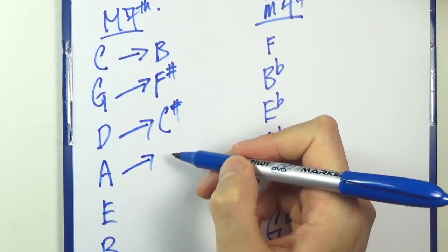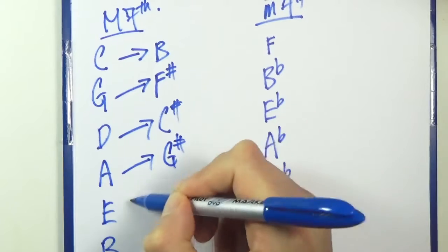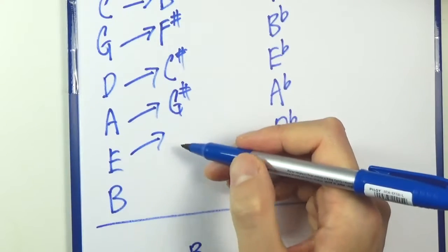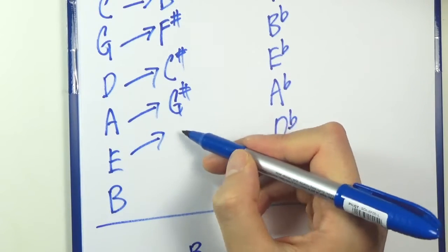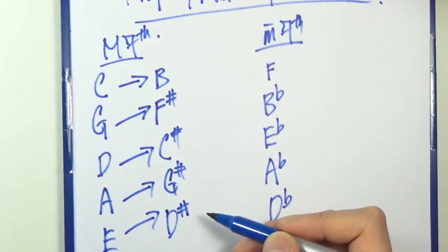A, what about A? What's the note half step below A? G sharp. E, what's the note half step below E? D sharp. Again, these are all major 7th intervals.